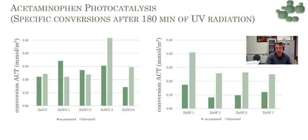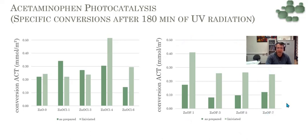For fluoride, the effect is very important. With a very low concentration of fluoride, we have a very significant increase in photocatalytic activity after lexiviation. Both fluoride and chloride on the surface are not beneficial, but are necessary in grain boundaries.